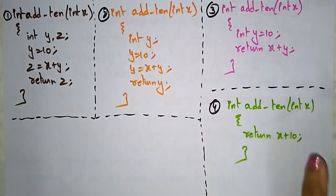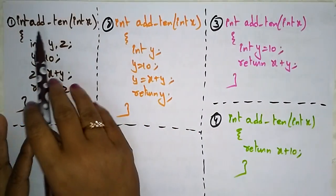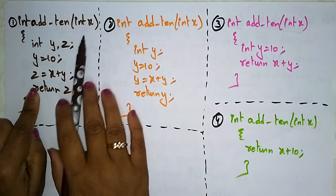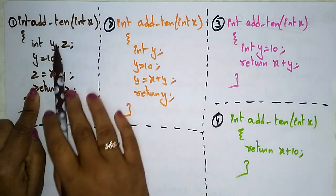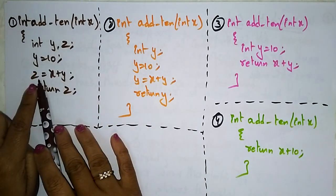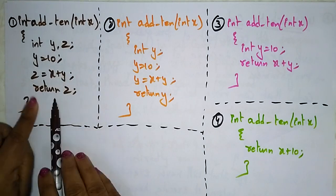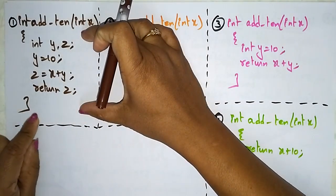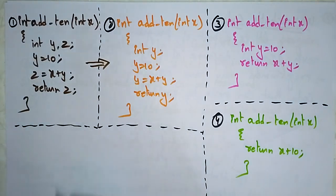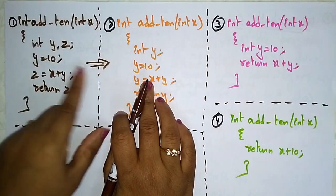At the source code level, consider this program: int addition with parameter int x. We declare integer variables y and z, assign 10 to y, and set z equal to x plus y, then return z. In redundant instruction elimination, we want to reduce this — eliminating the redundant variable z.